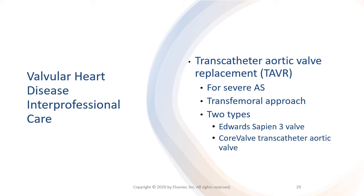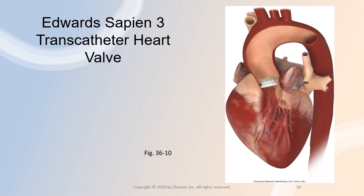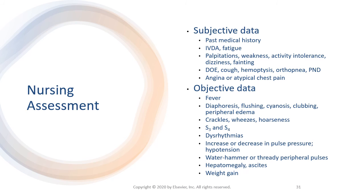Symptomatic aortic stenosis has a poor prognosis if left untreated. The procedure is ideally done using a transfemoral approach. The evaluation for TAVR includes echocardiogram, coronary CT angiogram, heart catheterization, and pulmonary function tests. Imaging can determine valve size and the plan for the procedure. Currently there are two TAVR valves in the United States: the Edwards Sapien III valve, made of bovine pericardial tissue and balloon expandable, and the CoreValve transcatheter aortic valve, a self-expanding valve made from porcine pericardial tissue.